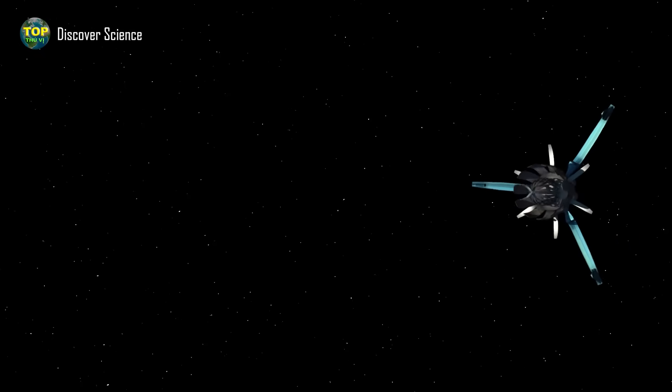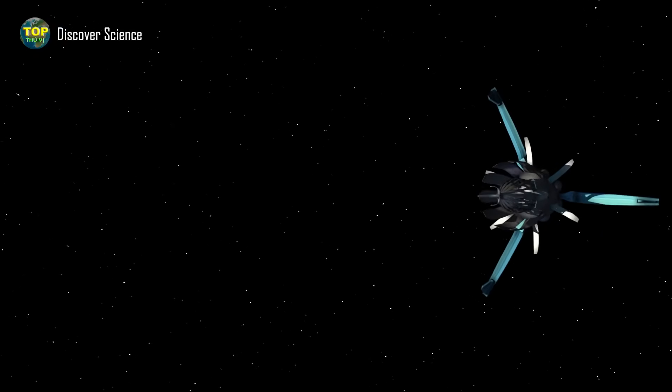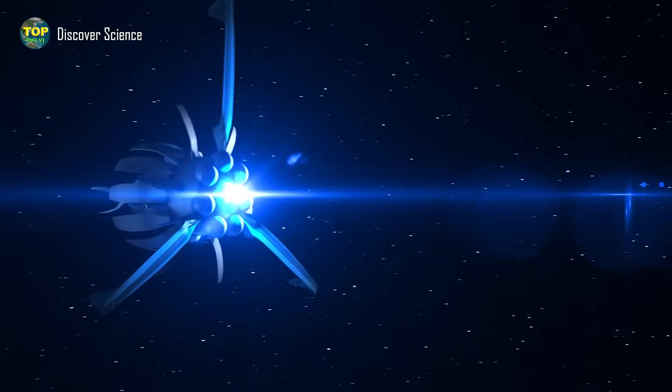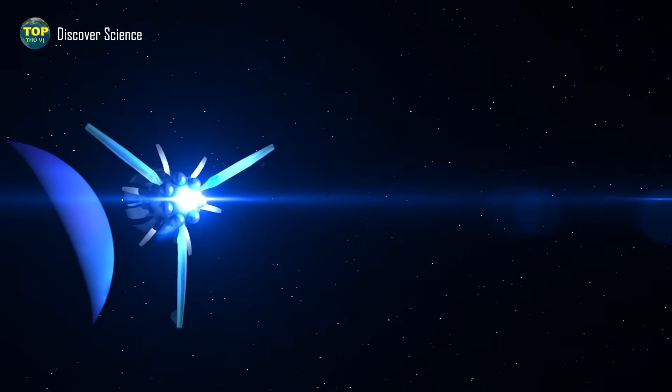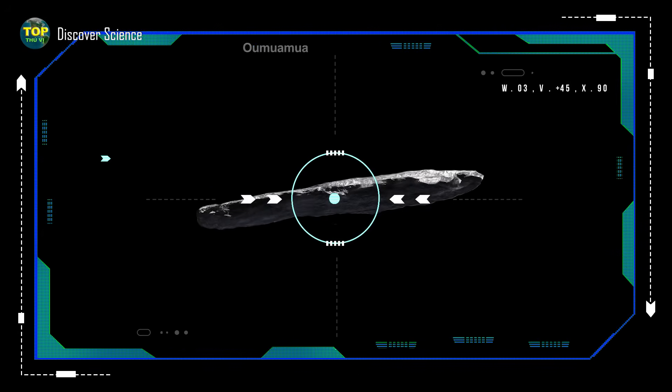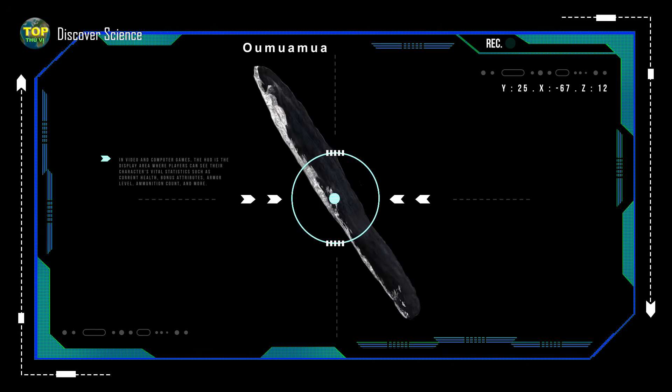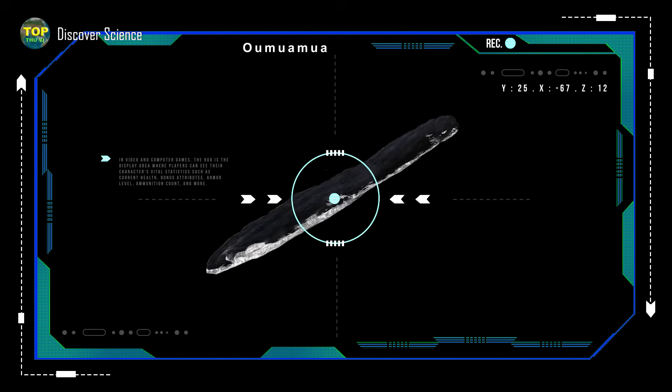While scientific observations have not provided a clear explanation, the idea that 'Oumuamua could be an alien spacecraft still lingers and continues to intrigue us. In recent years, several research groups have continued to seek explanations for 'Oumuamua's strange movement without resorting to extraterrestrial hypotheses.